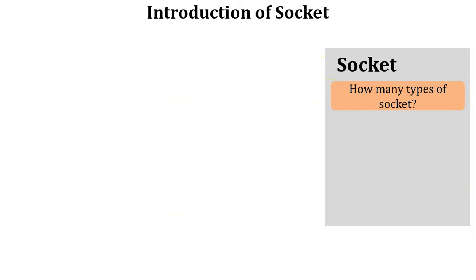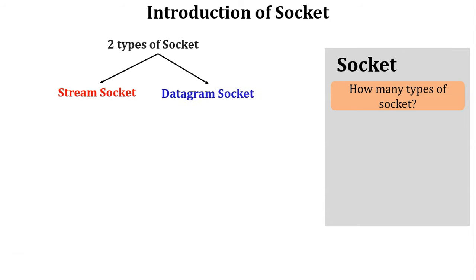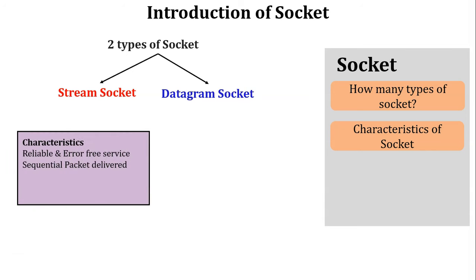Next, how many types of sockets are there? There are two main types: stream socket and datagram socket. The characteristics of a stream socket are reliable and error-free services. During transmission, if any packet is lost or damaged, it is retransmitted by the sender. Another characteristic is sequential packet delivery — the sender assigns sequence numbers to all packets and sends them one by one in a sequential manner. Using sequence numbers, reliable and error-free services are provided by the stream socket.